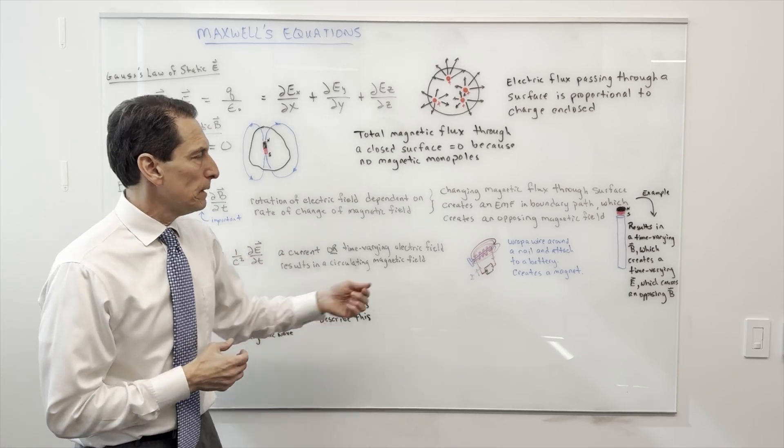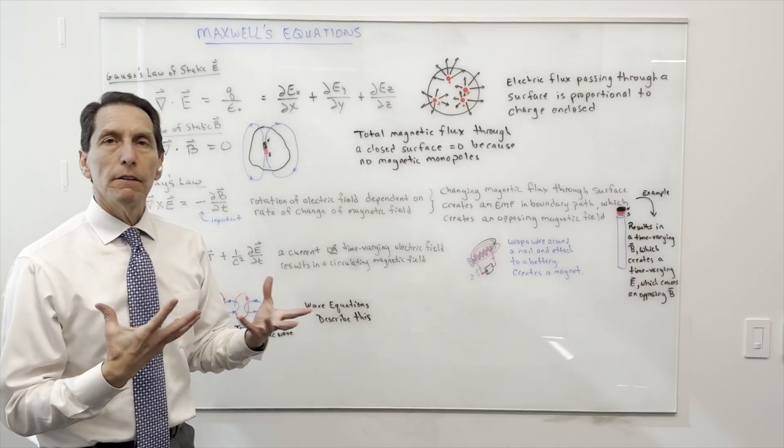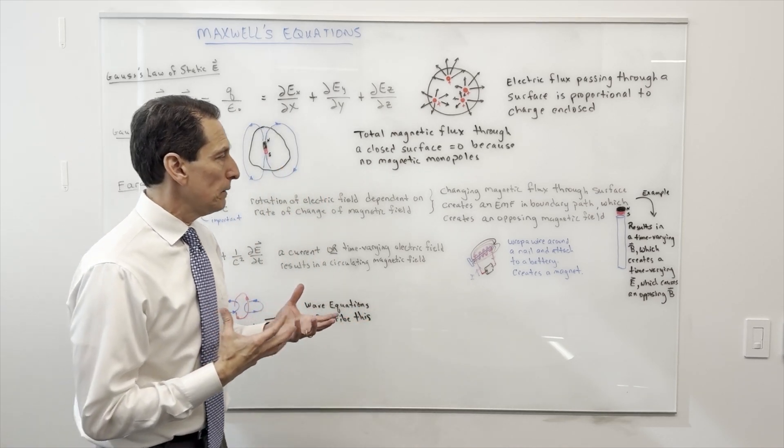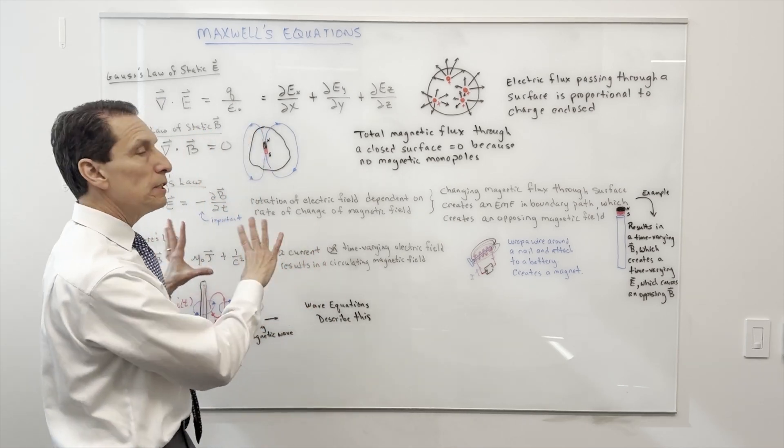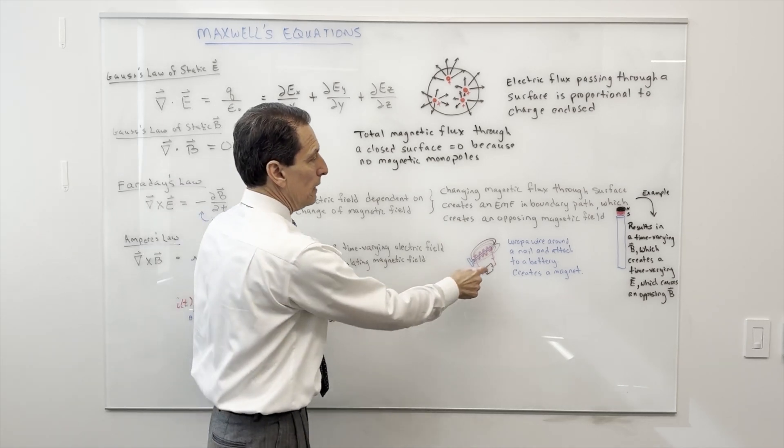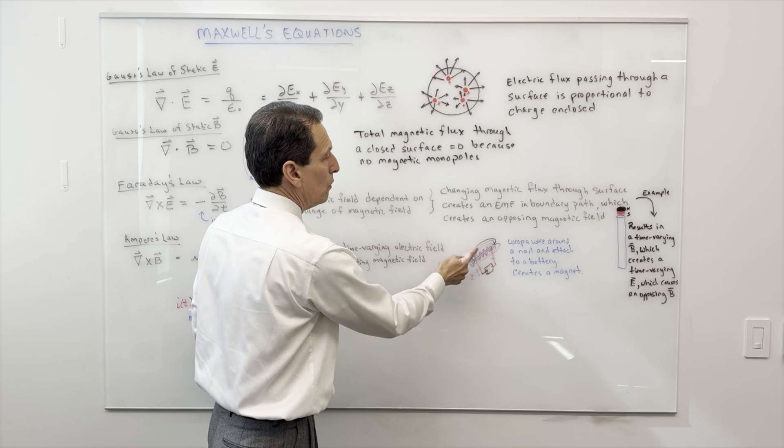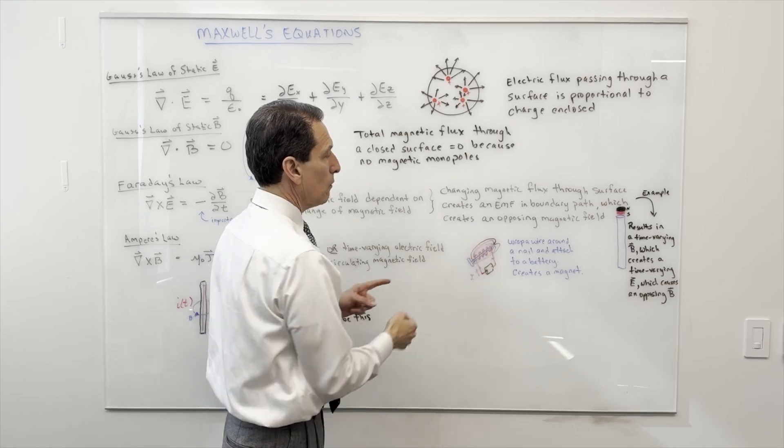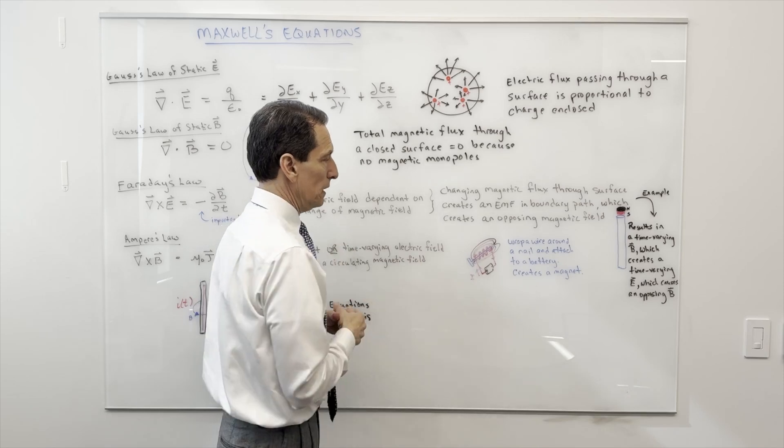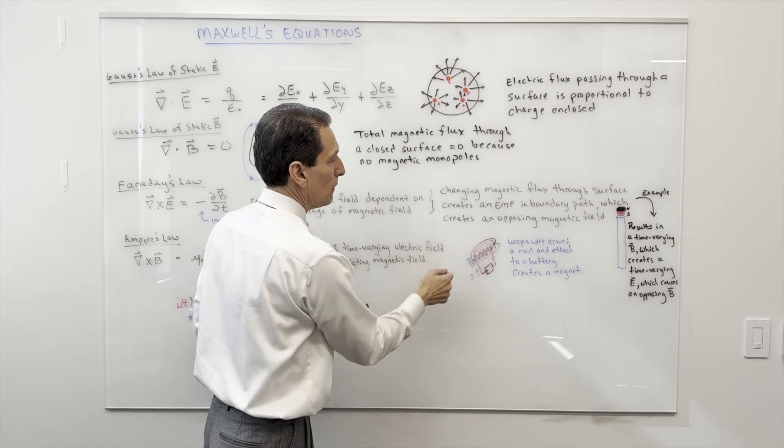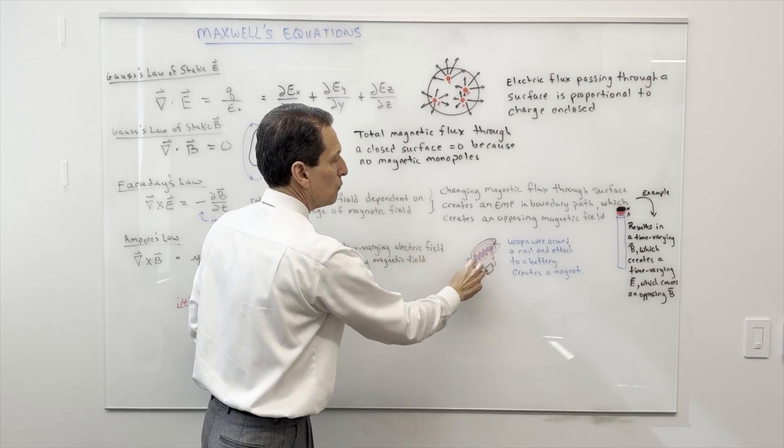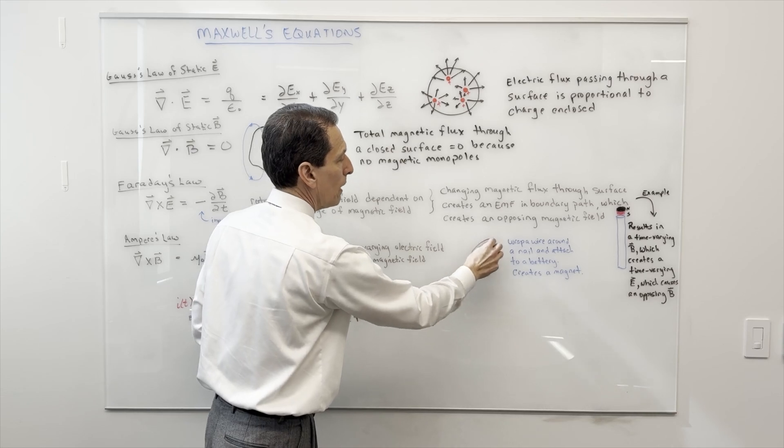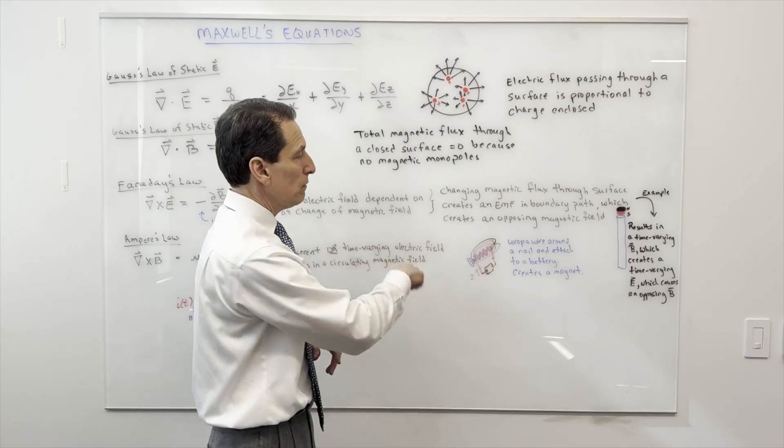A very simple example is kids maybe in fifth or sixth grade often do a little experiment that demonstrates this. They probably don't really understand what they're doing, but this is what they do: they take a battery and they hook it to a coil of wire, and they wrap a coil of wire around a nail. The wire is insulated so it's not touching the nail, goes around the nail.